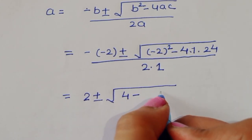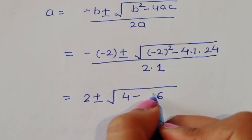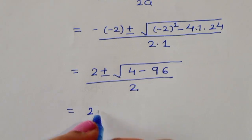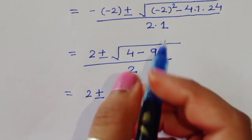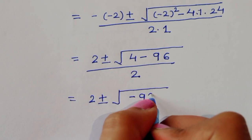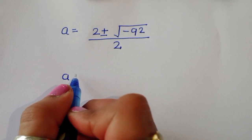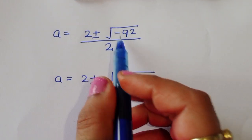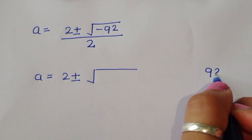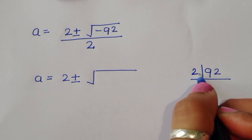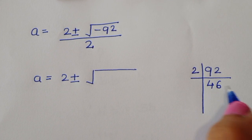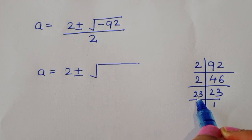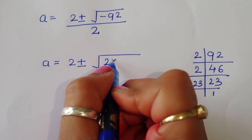This gives us 2 plus or minus square root of negative 92, divided by 2. Now we take the factors of 92: 92 equals 2 times 2 times 23.